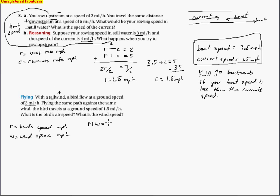And then it says flying the same path against the same wind, the ground speed was only 1.5. So r minus w equals 1.5. So when we add this together, we end up with 2r equals 4.5. So when we do that division, r is 2.25 miles per hour. So we can say the rate of bird's speed is 2.25 miles per hour.